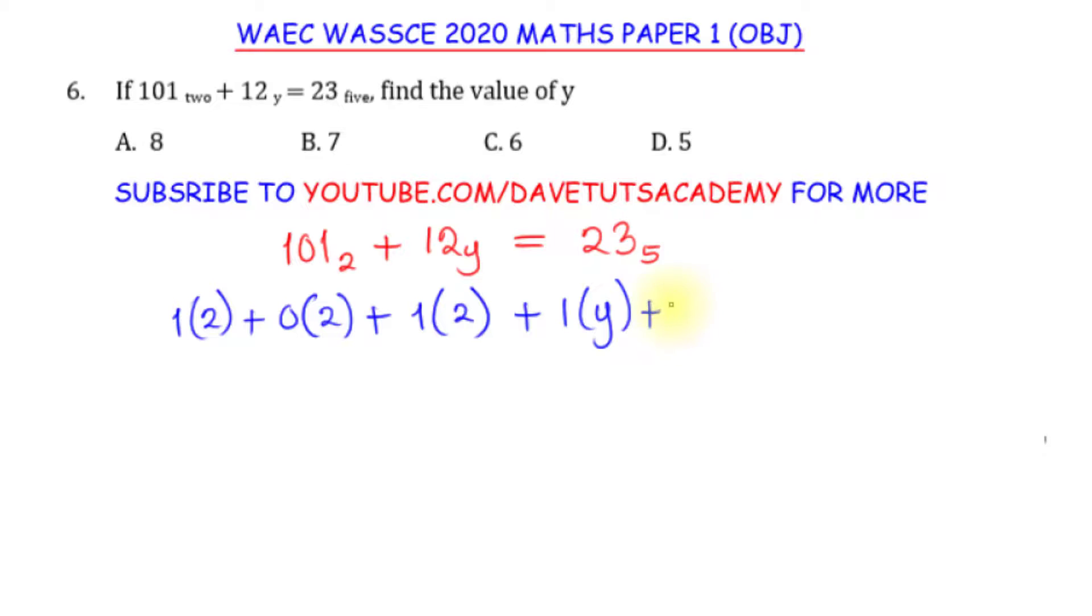We have 1 times 2 raised to power 2 plus 0 times 2 raised to power 1 plus 1 times 2 raised to power 0, and then to the right hand side, we have 2 times 5 raised to power 1 plus 3 times 5 raised to power 0. This is the conversion that will really help us to solve this type of question whenever we come across them.